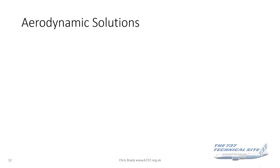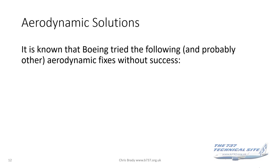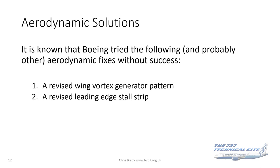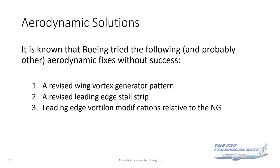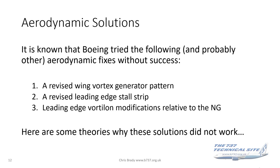So what did Boeing try to do about this? First, they looked for aerodynamic solutions. The following were tried and unfortunately didn't succeed: a revised wing vortex generator pattern, revising the leading edge stall strip, and leading edge vortalon modifications.